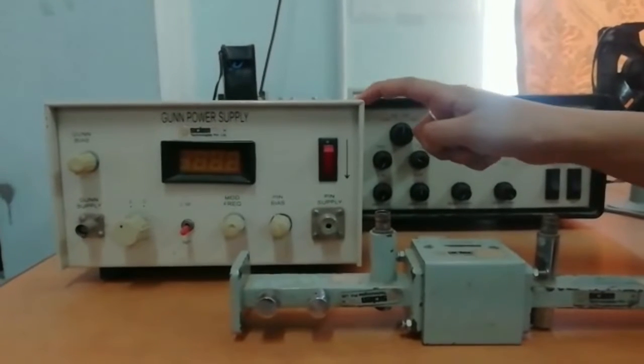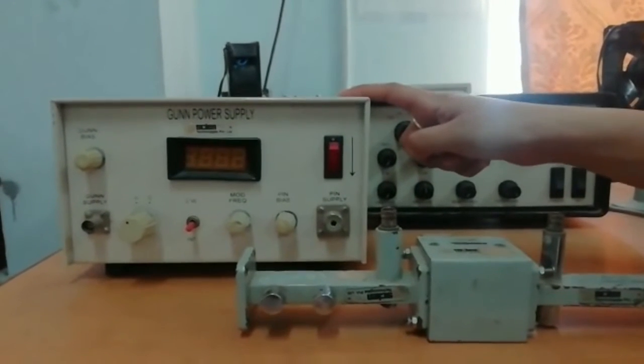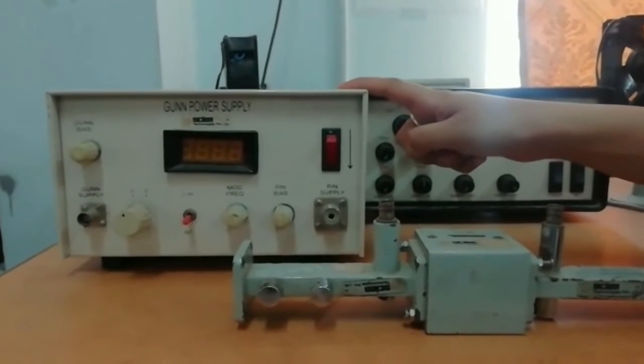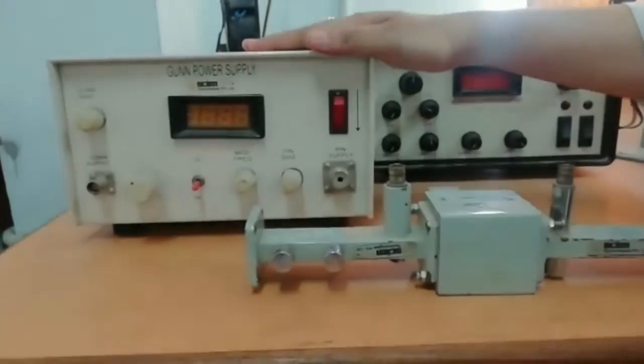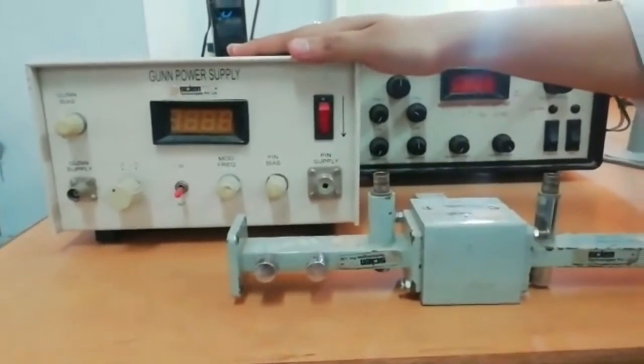The Gunn power supply has a voltage ranging from 0 to 10 volts, a current of 750 milliamperes maximum, and a modulation frequency of 900 to 1100 hertz.